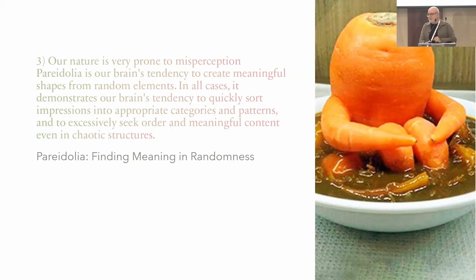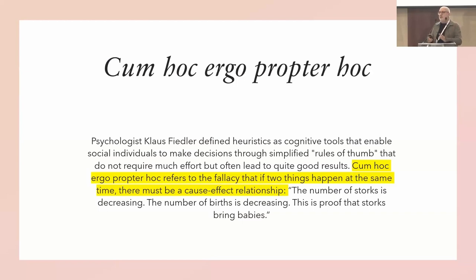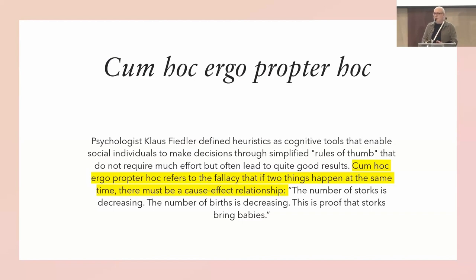As you see in the picture, there is another effect — it's called post hoc ergo propter hoc. This refers to the fallacy that if two things happen at the same time, there must be a cause-and-effect relationship. For example: the number of storks is decreasing and the number of births is decreasing — this is taken as proof that storks bring babies. This is our nature.